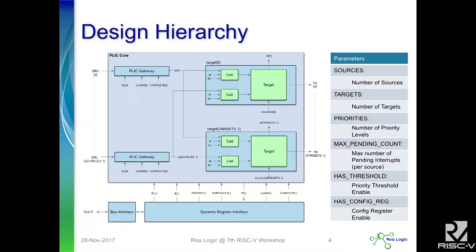The core requires a number of configuration signals that come from the register interface. The small block on the left is the bus interface, which is very flexible — you can swap out different bus systems as you want. The IP is fully parameterized, so you can specify the number of sources, the number of targets, the priority levels, and whether or not it has thresholds and configuration registers.